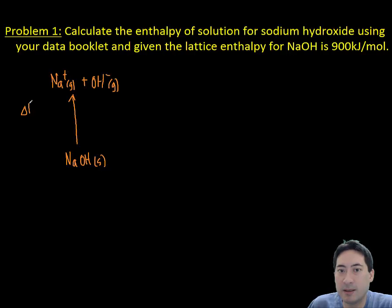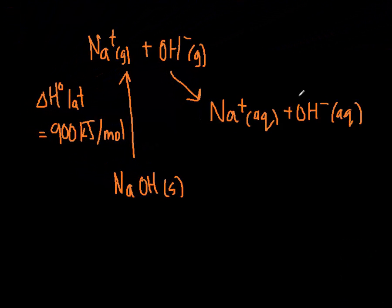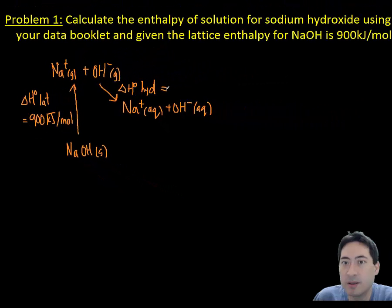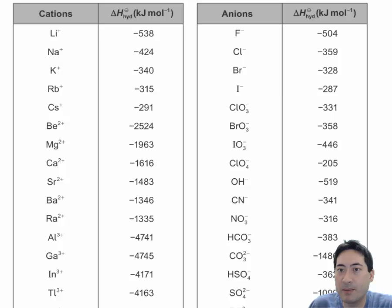We first get the lattice dissociation enthalpy, which is 900 kilojoules per mole. We are then going to grab the gaseous ions and put them into water. So that's enthalpy of hydration. So we can go to our data booklet here, grab those values.